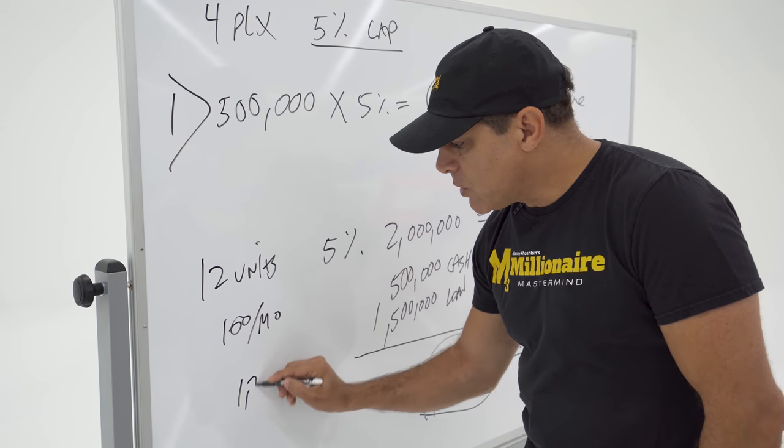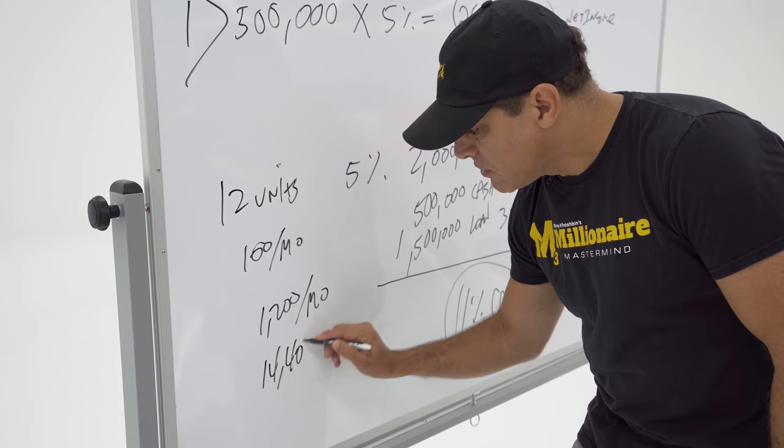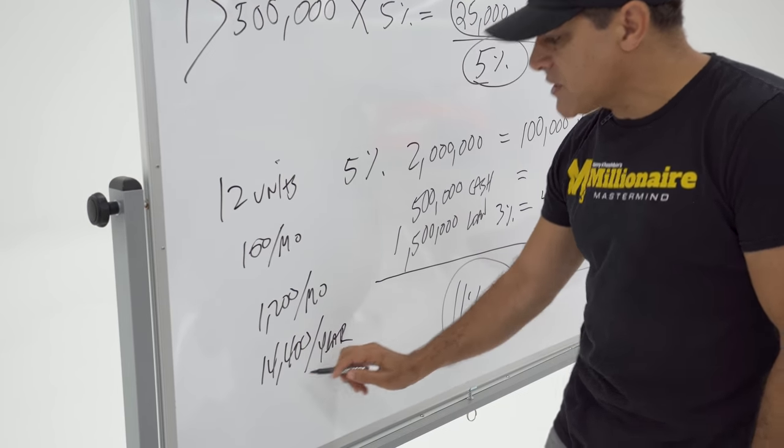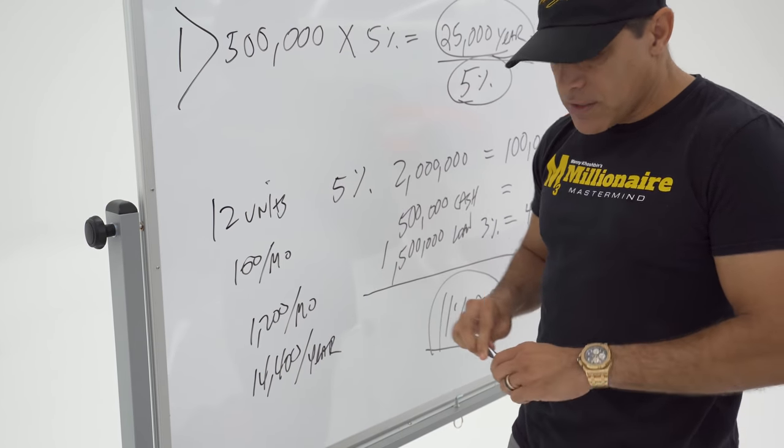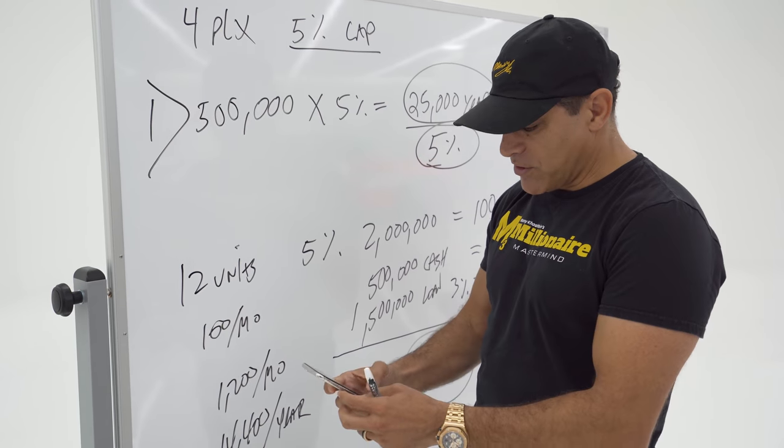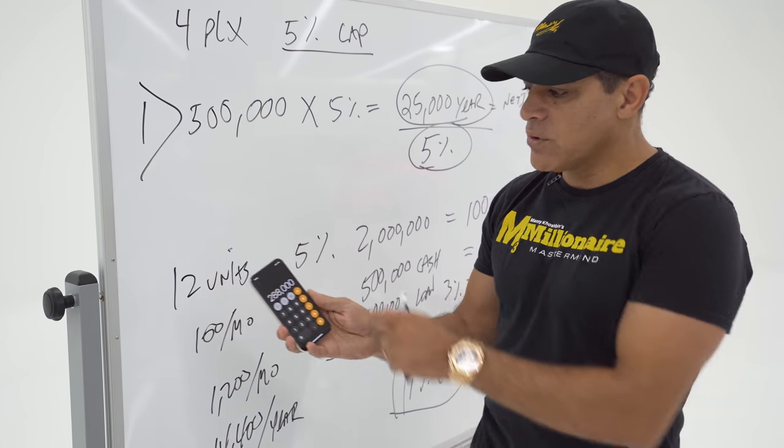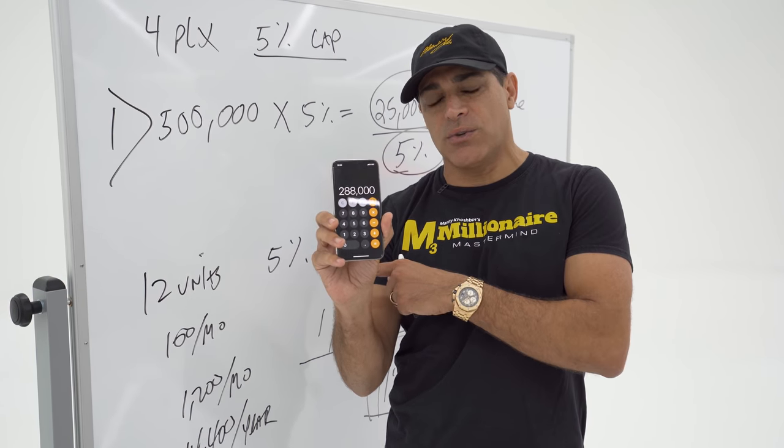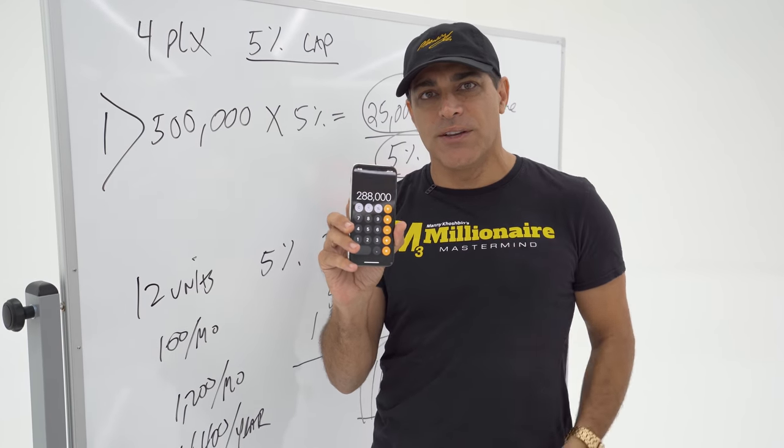So let's just say you increase the income by $100 a month. That's $1,200 per month, $14,400 per year. Now if you take the same cap rate, 5%, and you take this divided by the cap rate, that's going to tell you how much you can pick up on the resale profit. So $14,400 divided by 0.05, you just picked up $288,000 more on the resale value by just increasing $100 a month per unit. That's easy.